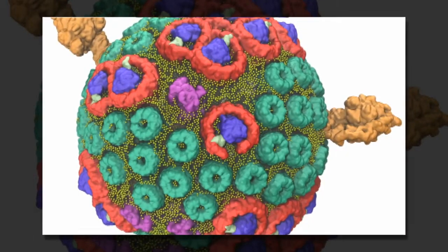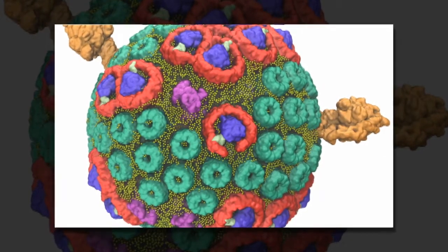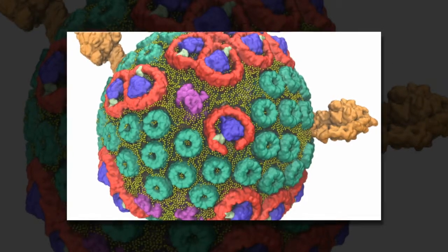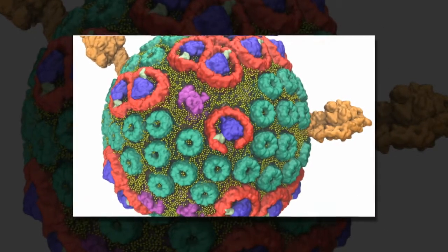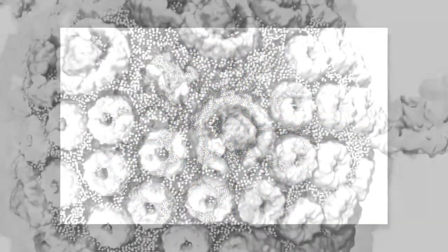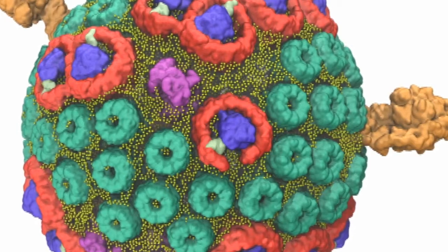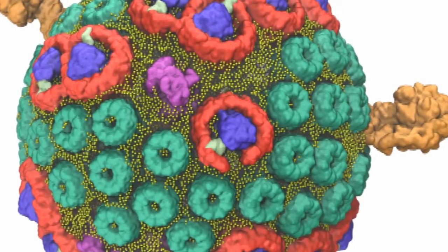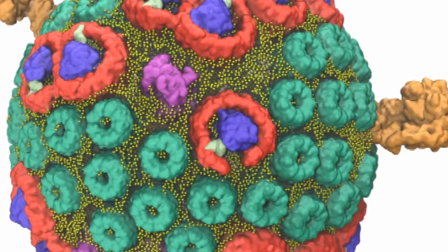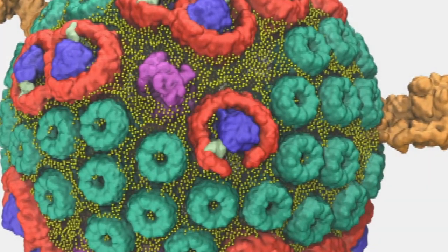The soccer ball-shaped chromatophore contained more than 100 million atoms — a significantly larger biomolecular system than any previously modeled. The project's scale required Titan, the flagship supercomputer at the Oak Ridge Leadership Computing Facility, a DOE Office of Science user facility, to calculate the interaction of millions of atoms in a feasible time frame that would allow for data analysis.